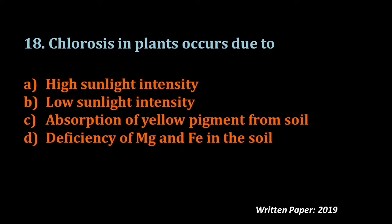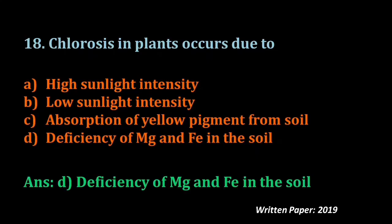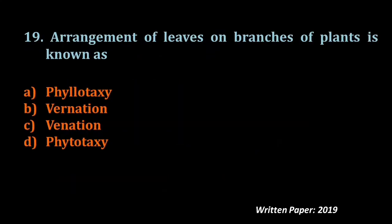Question number eighteen: Chlorosis in plants occurs due to — high sunlight intensity, low sunlight intensity, absorption of yellow pigment from soil, or deficiency of magnesium and iron in the soil. For the production of chlorophyll, magnesium is needed in the leaves. If magnesium is deficient, chlorophyll formation is reduced and the leaf becomes yellow — that disorder is called chlorosis. The answer is D — deficiency of magnesium and iron. For such questions, go through the chapter on soil science in the forestry textbook.